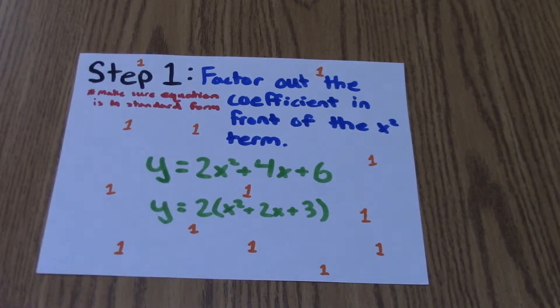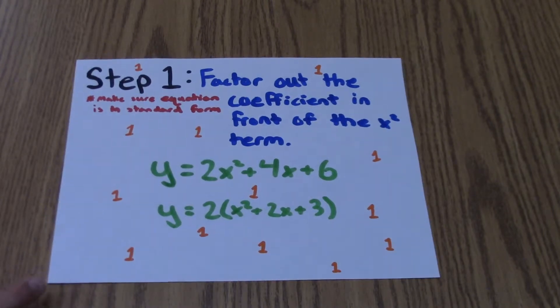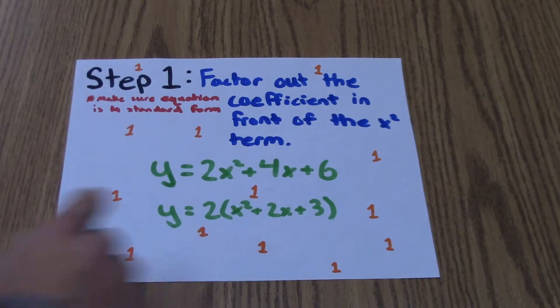Step 1. Factor out the coefficient in front of the x squared term. In this case, we factor out the 2.